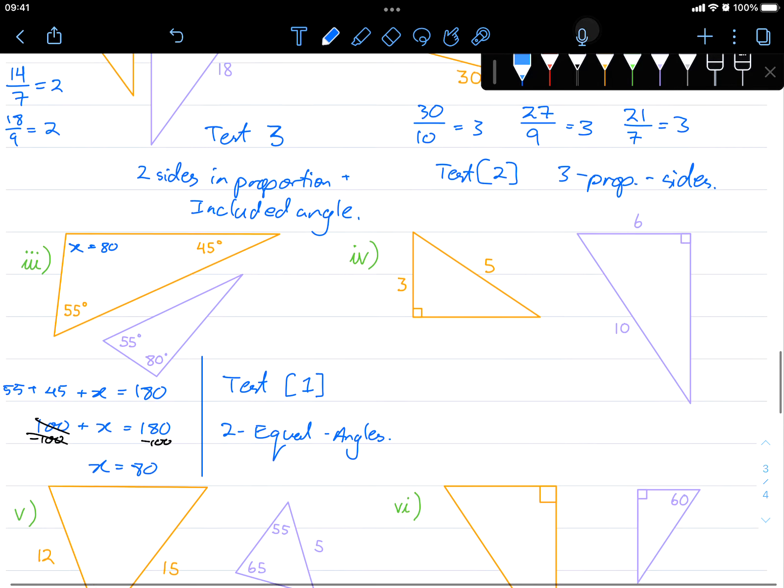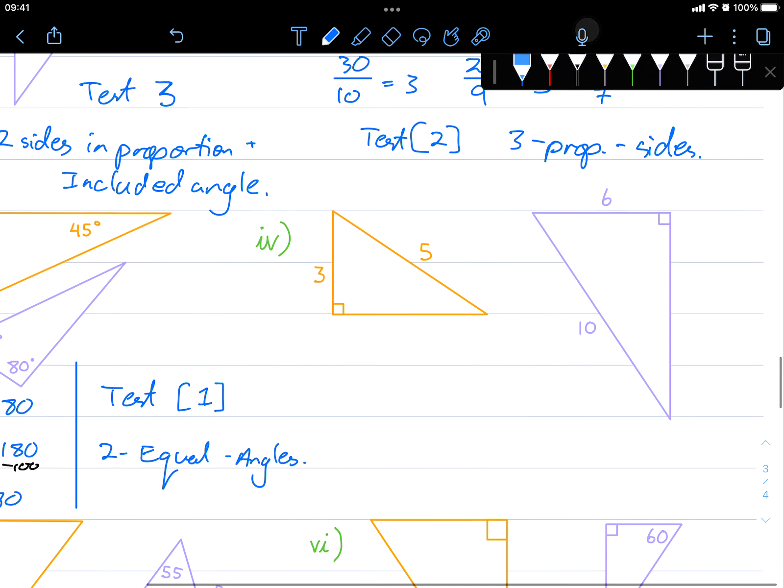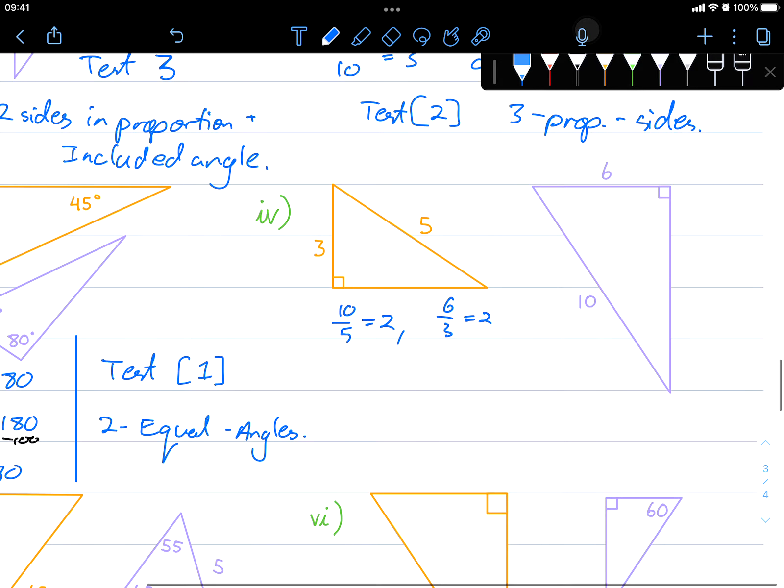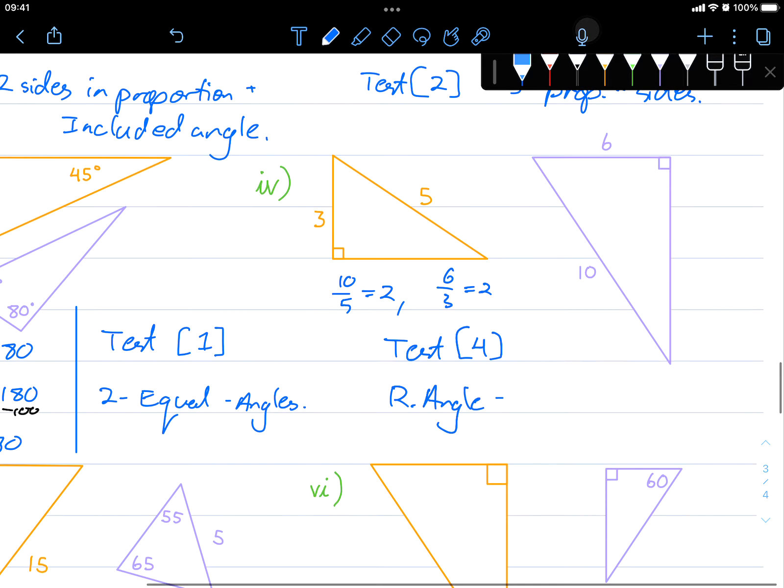Let's do another one here. Take a close look. We have a right angle. And we have 2 sides in proportion. I can see that already. That's 10 divided by 5. That's both the hypotenuse. So 10 divided by 5 is 2. And 6 divided by 3 is also 2. That there is test 4. That is right angle and 2 proportional sides.